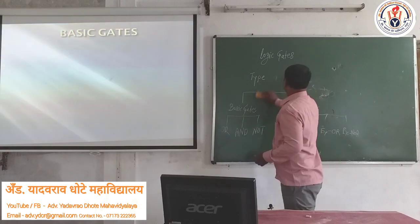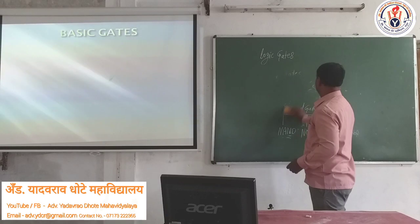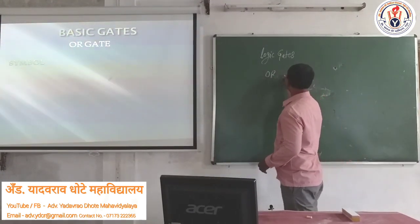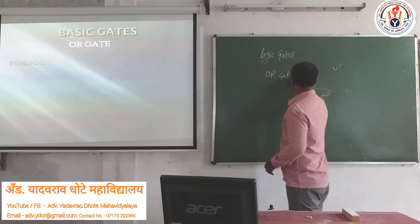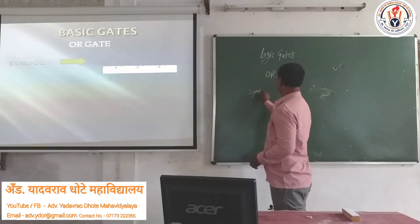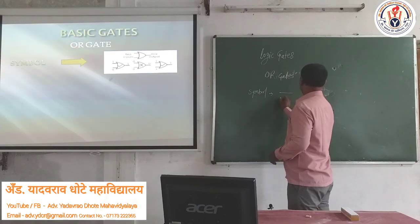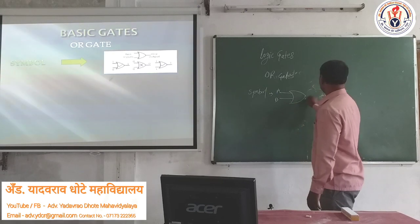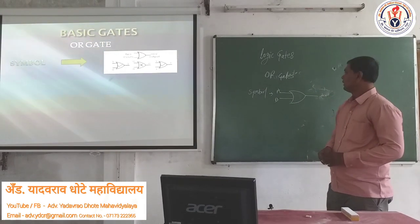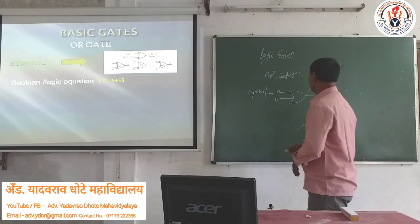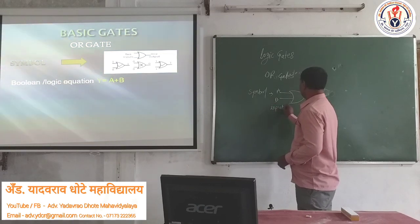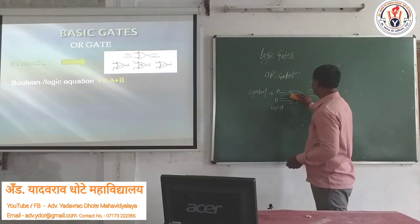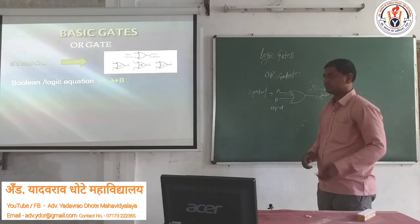Now we discuss the OR gate — the first basic gate, OR gate. The symbol of OR gate has two inputs, A and B. The symbol looks like a rocket. There are two inputs on the input side. It can also have three inputs or four inputs, because one or more inputs are allowed in gates, and one output.